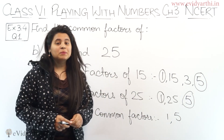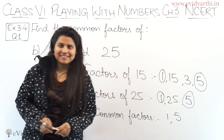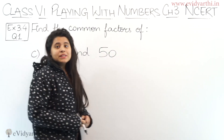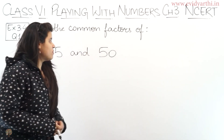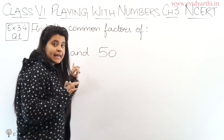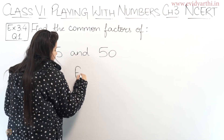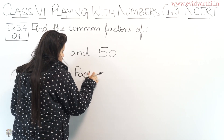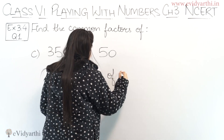Okay, so that was Part B. Let's come to the next part — Part C. The numbers are 35 and 50. We need to find factors of 35 and 50. First, factors of 35.